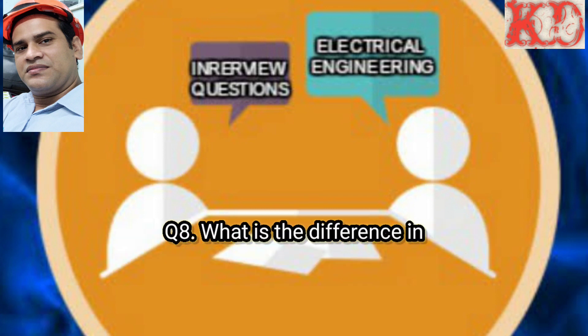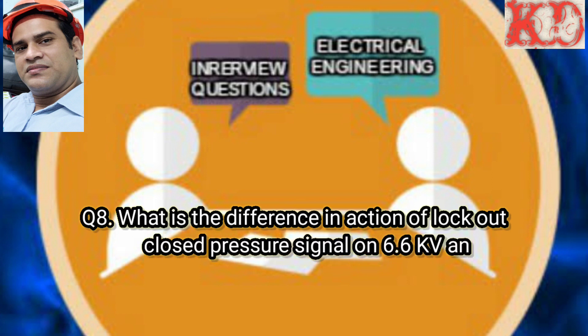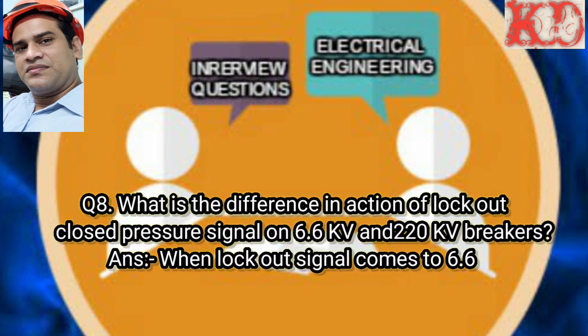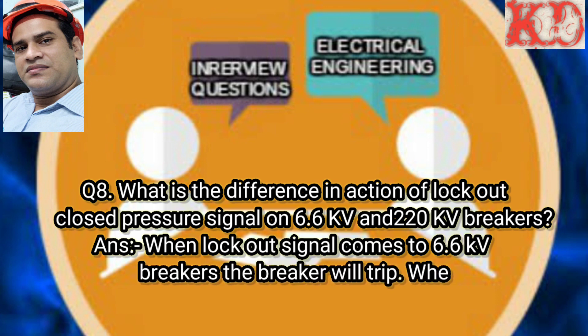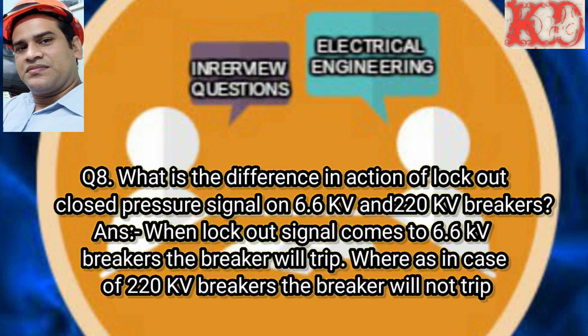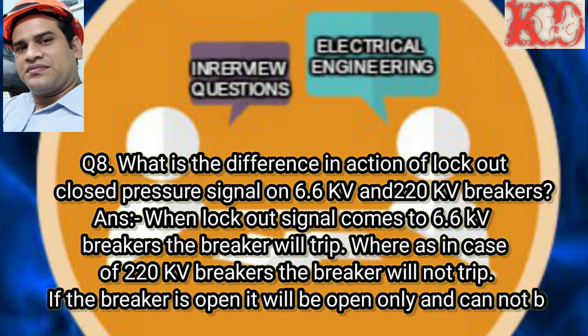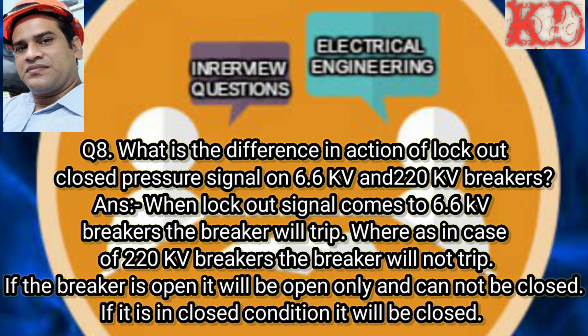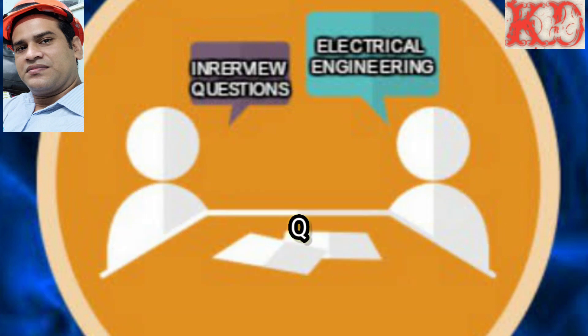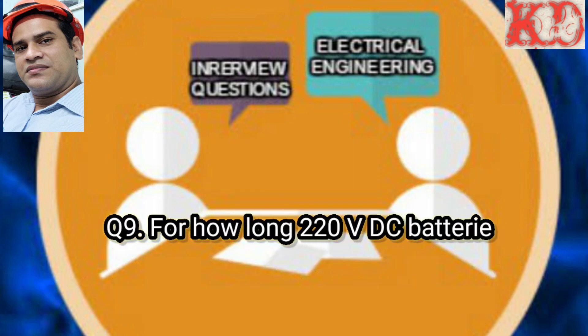Question number 8: What is the difference in action of a lockout pressure signal on 6.6 KV and 220 KV breakers? Answer: When a lockout signal comes to 6.6 KV breakers, the breakers will trip. Whereas in the case of 220 KV breakers, the breaker will not trip — if the breaker is open, it will remain open only, and if it is in closed condition, it will remain closed.